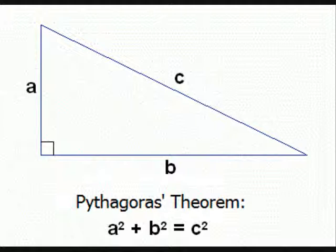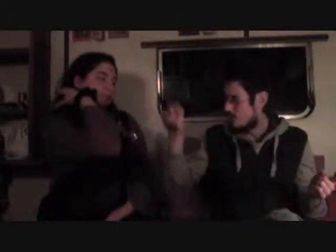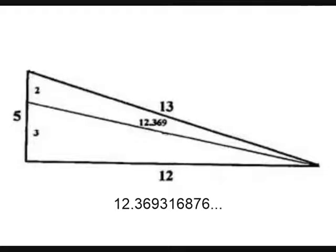If you split the five-side into two and three, and take a line from the in-between point, you get something which is longer than 12 but shorter than 13 — it's 12.369 roughly. It's the square root of 153, which is that number that shows up in the Gospel of John.